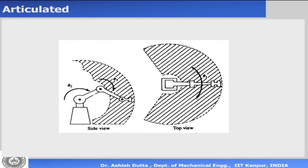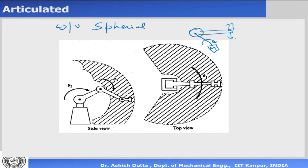The most common robot is the articulated robot, which also has a spherical work volume. Because it uses revolute joints, if there is a very heavy load the torque becomes very high, whereas for a prismatic joint a rack-and-pinion mechanism can sustain heavy loads. Articulated robots have large work volumes but are not very good at carrying load.